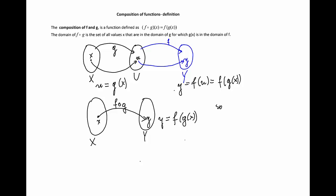So the definition is that f circle g, a new function formed by using functions f and g at the input x, is the value of function f at g of x.